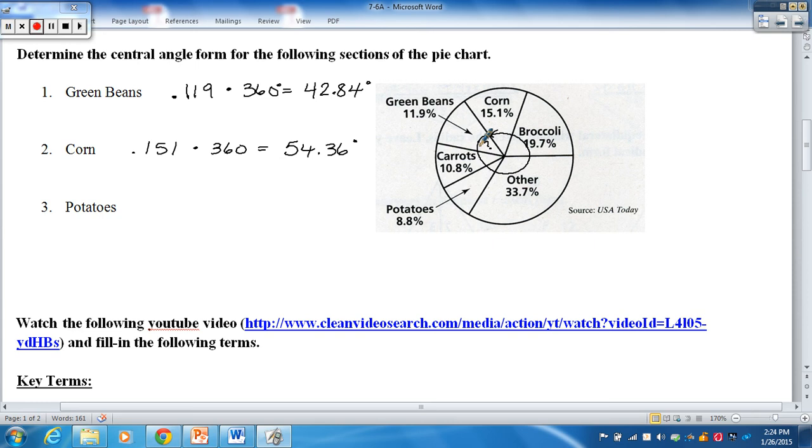The potatoes, the reason I wanted to do the potatoes, I wanted to make sure that you were moving your decimal two places here. So if I do that, move it two places, I should have 0.088 times 360. And if we work that out, we have 31.68 degrees. 32 degrees. That's how you figure out the measure of the central angles there. So if you ever had to construct a pie chart on your own, and you had the percentages, and you had a protractor, you could go ahead and do that.